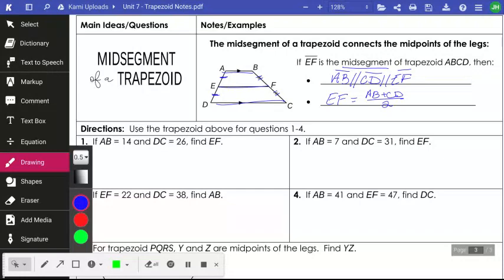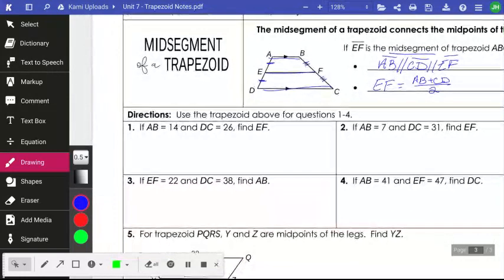So if we practice, we're going to use that same diagram for the next four problems. And they have given us AB is 14. Okay, and I'm just going to draw a little sketch here. So this is 14. All right, DC is 26. And we are trying to find EF.